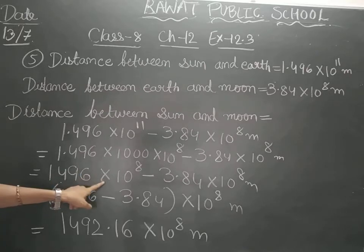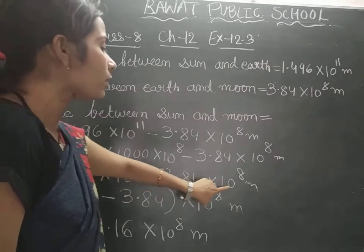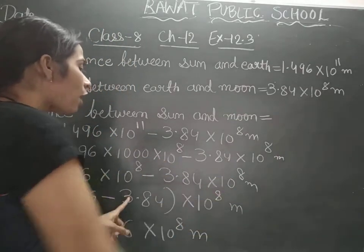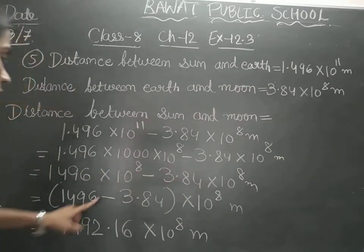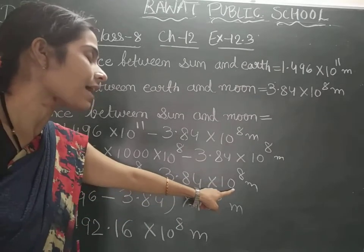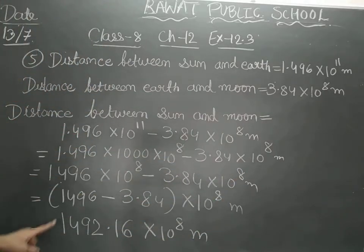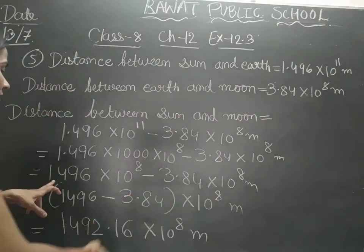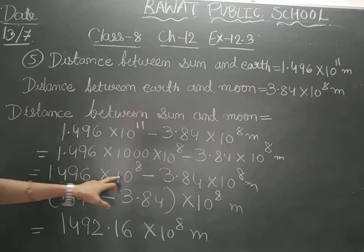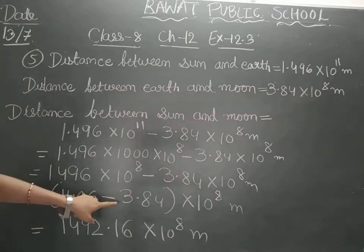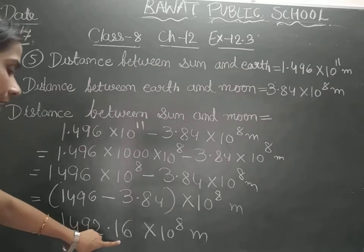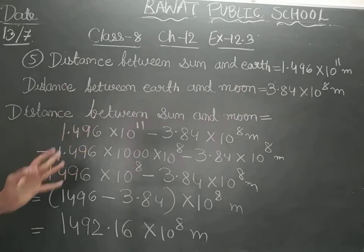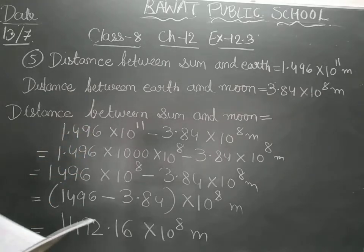So it will be 1496 into 10 raised to 8 minus 3.84 into 10 raised to 8. We did that because we wanted to have the powers equal — here also we are having 10 raised to 8, and here also 10 raised to 8. As the powers are common, we can take it common and subtract: 1496 minus 3.84. So what we get is 1492.16 into 10 raised to 8 meters. This is the distance between sun and moon at the time of solar eclipse.